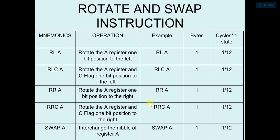So now in RR and RRC, RR means rotate the register one bit position to the right. So now suppose you have some data like 1010, after this operation it will be something like 0101.